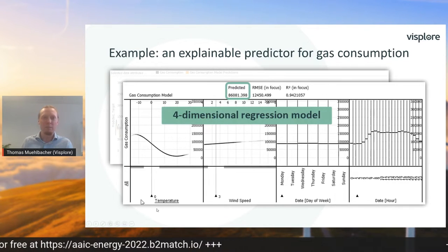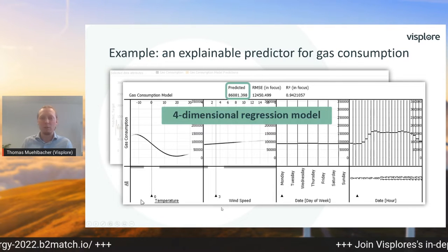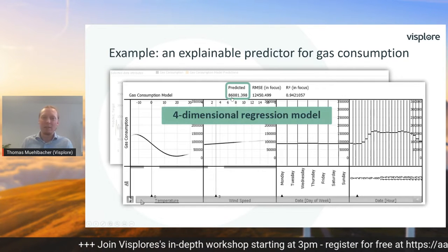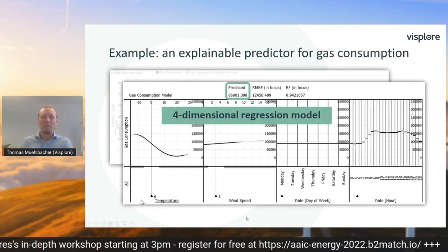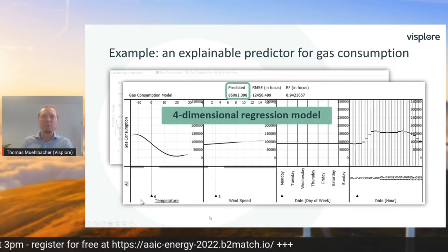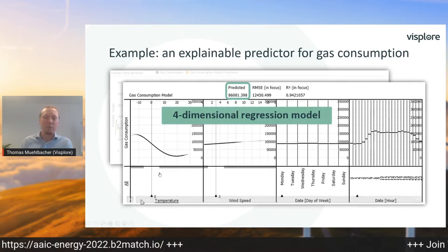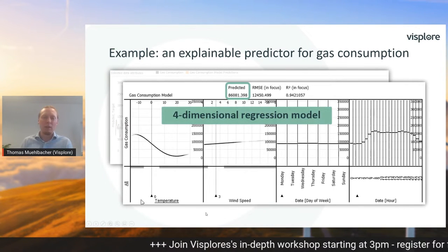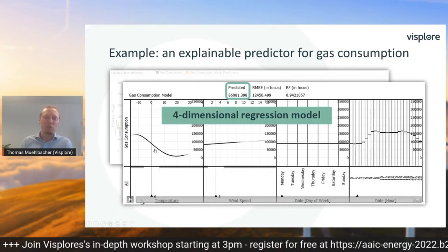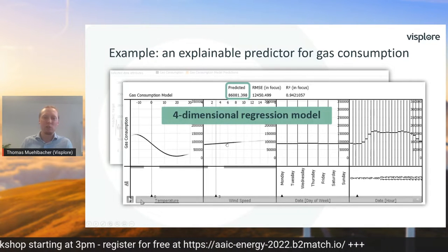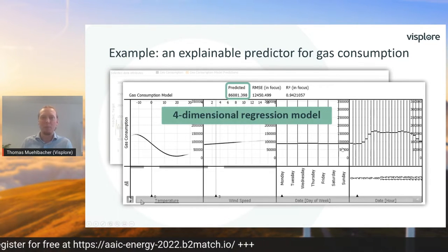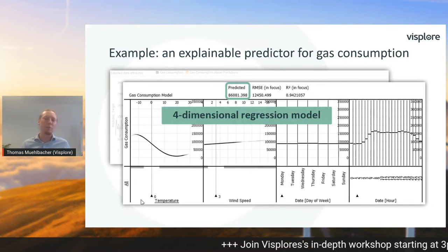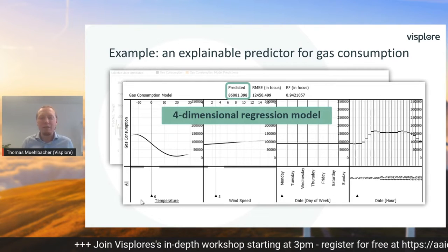The visualization tells you what the model predicts when you have certain values for the inputs. Currently we are looking at the situation of zero degrees temperature, wind speed of three meters per second, on a Monday at 2 a.m., and for this particular situation the predicted gas consumption is approximately 86,000 units. The graphs show what would happen if one parameter was different — for example, if the temperature was warmer, the gas consumption would be lower. The steep slope of this graph also tells you that a slight change of temperature makes much more difference than a slight change of wind speed, so temperature is more relevant for gas consumption than wind. This kind of information is important for building trust, because domain experts can tell if this matches their expectations.